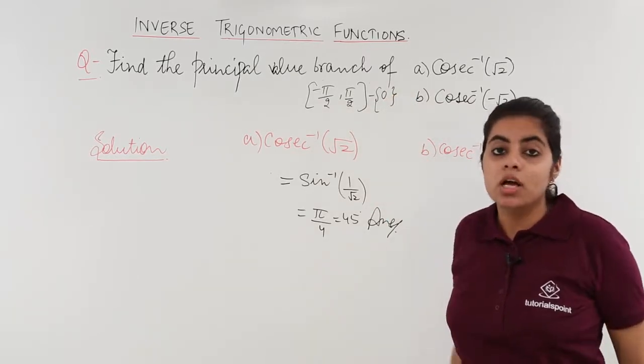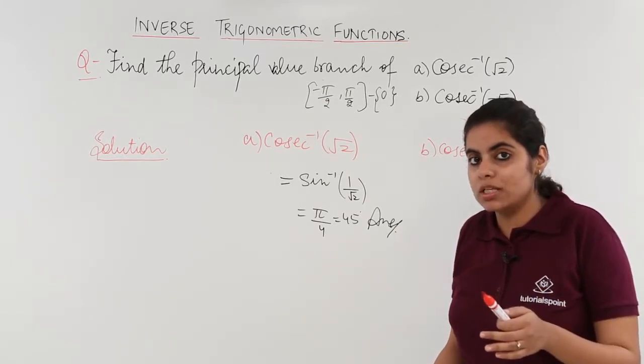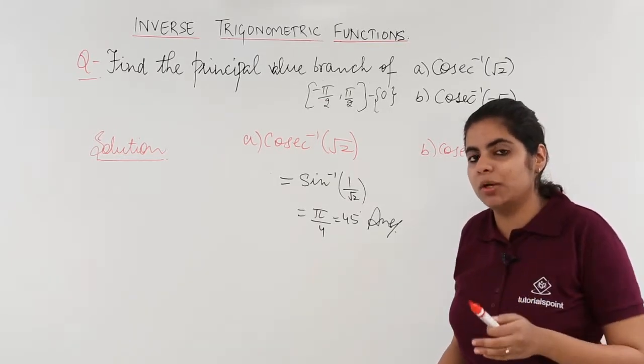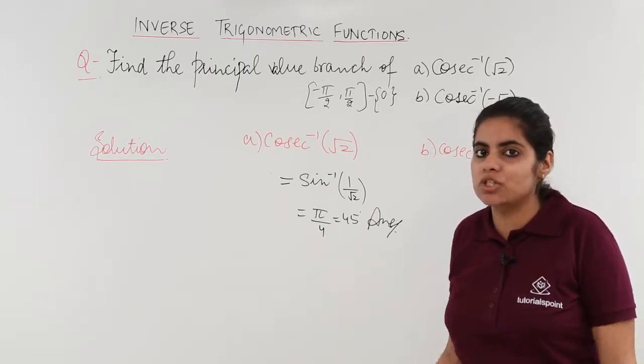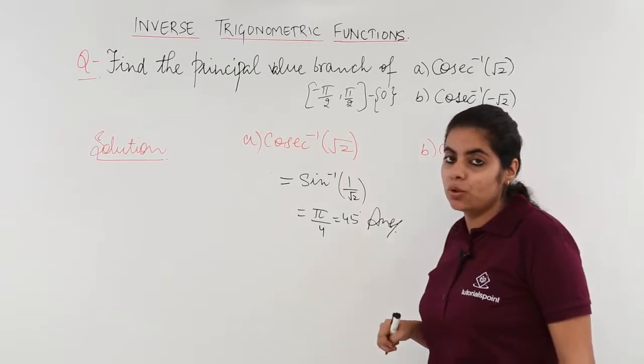Never ever, because cosecant 0 means 1 upon sine 0, and 1 upon sine 0 means 1 upon 0, which is not defined. So cosecant 0 is not defined, hence you cannot include 0.